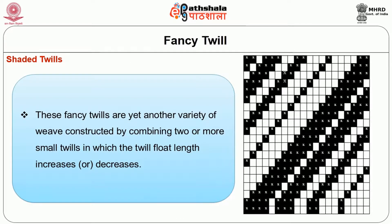The second variety of fancy twills is the shaded twills. These are constructed by combining two or more small twills in which the twill float length increases and decreases. Figure 1.2 depicts a shaded twill composite of four twill weaves repeating on 4 threads, arranged in order of 4-up-1-down, 3-up-2-down, 2-up-3-down, and 1-up-4-down weaves. The weave repeats on 20 ends and 20 picks, and the twills are arranged so that the shade effect either increases or decreases along the diagonal line.